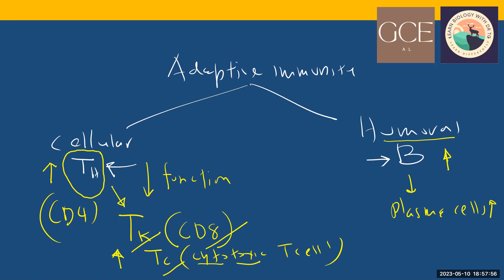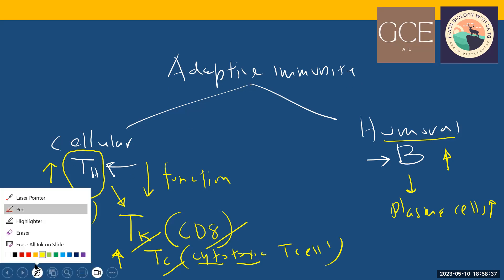We do not want to keep all these cells in the body because the pathogen is no longer present. So generally the immune system keeps only a small number of cells specific for each antigen. Immune system does not keep large numbers of cells specific for any one antigen, so just a small number are kept. When the immune system clears the pathogen, cell numbers decrease again.